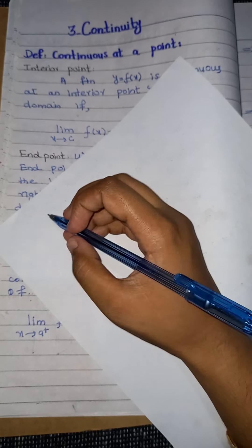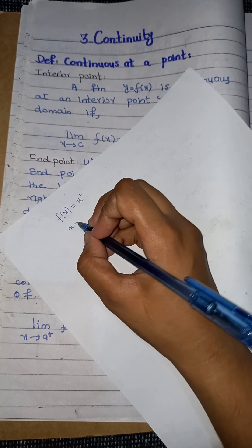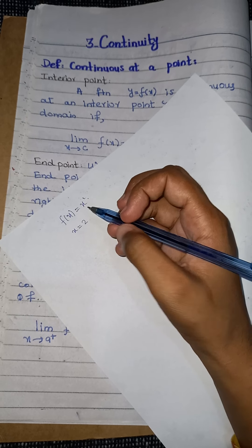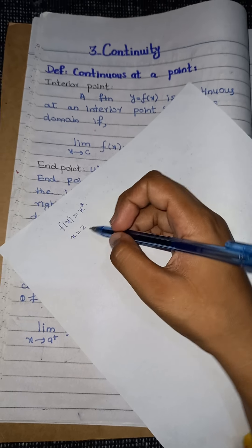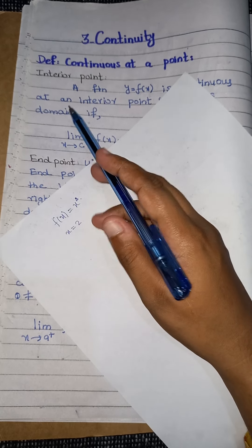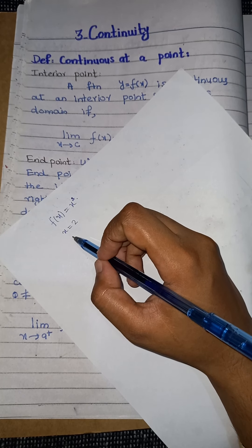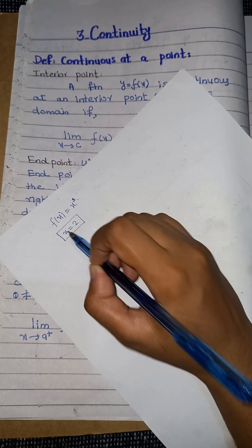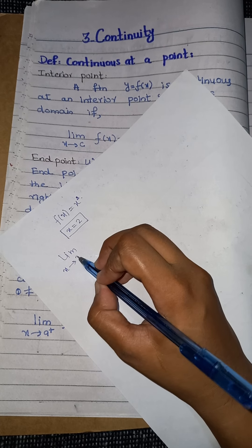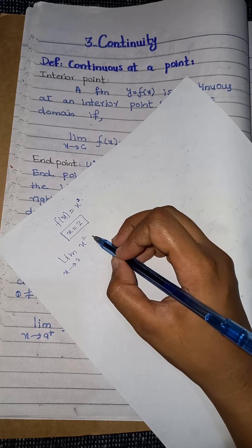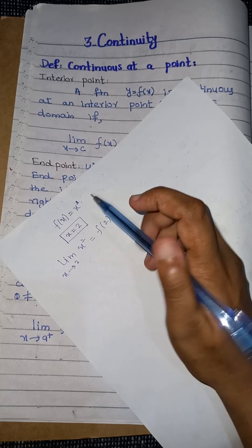For example, I will take the function f(x) = x² and check its continuity at the point x = 2. We know that x² is continuous throughout its domain, but I want to show how this definition works. I will take the limit as x approaches 2 applied to the function, and if its answer equals f(2), then it is continuous at that interior point.